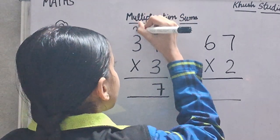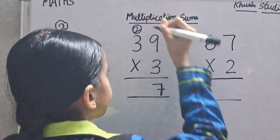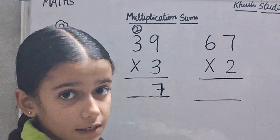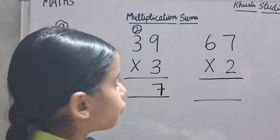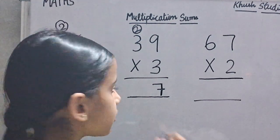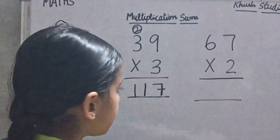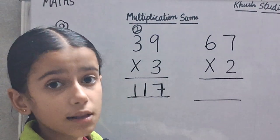We will carry 2. 3 threes are 9. We will add 2. 9 plus 2 is 11. So the answer is 117.